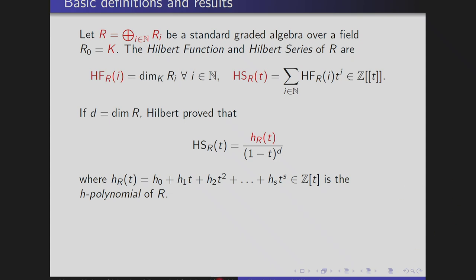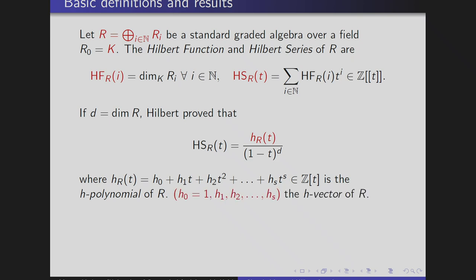Here H_0 is of course 1. H_1 is the dimension of R_1 minus D, and then the other numbers have a not-so-clear description. This vector is the H-vector of R.